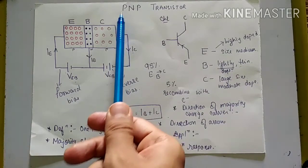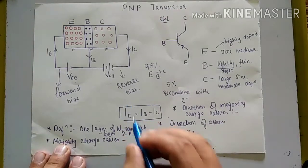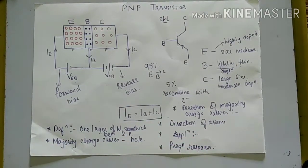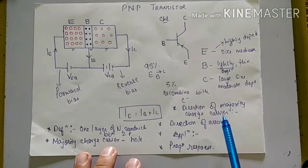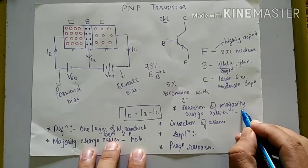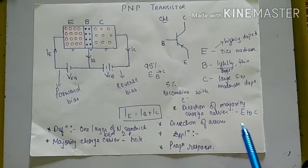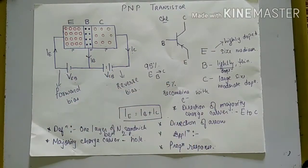The majority charge carrier in PNP transistor — in P type, the majority charge carrier is hole, so in PNP transistor the majority charge carrier is hole. The direction of the majority charge carrier: always remember, whether it is NPN or PNP, the direction of majority charge carrier is always from emitter to collector.